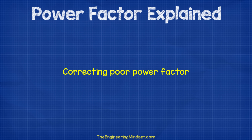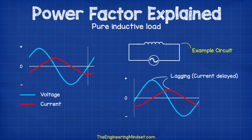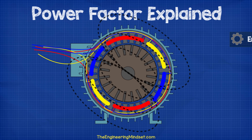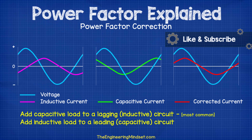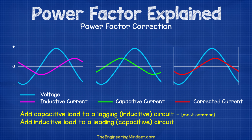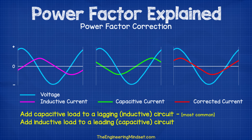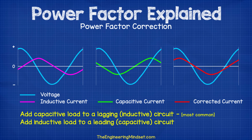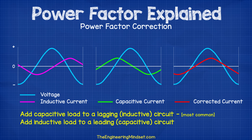Correcting poor power factor — what can we do to correct poor power factor and reactive power charges? In most cases, we come across lagging power factor caused by inductive loads. To correct poor power factor, we can add capacitors or inductors to the circuit, which will realign the current back into phase and bring the power factor closer to one. If we have a lagging power factor caused by high inductive loads, then we add capacitors. If we have a leading power factor caused by high capacitive loads, then we add an inductive load to the circuit. These need to be calculated, and we'll see some example calculations at the end of the video.